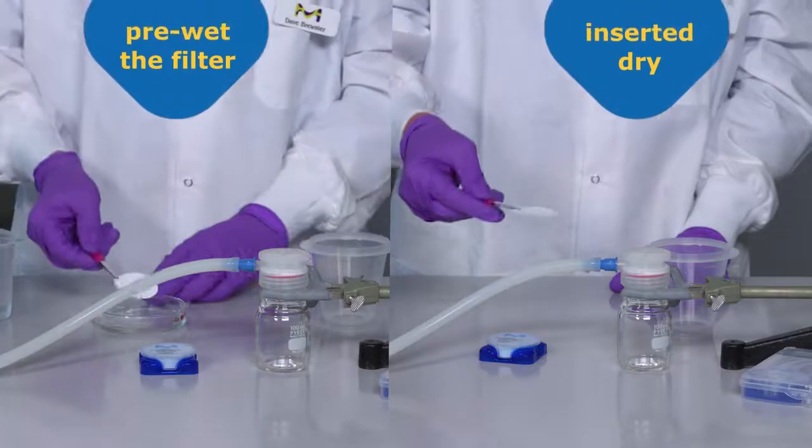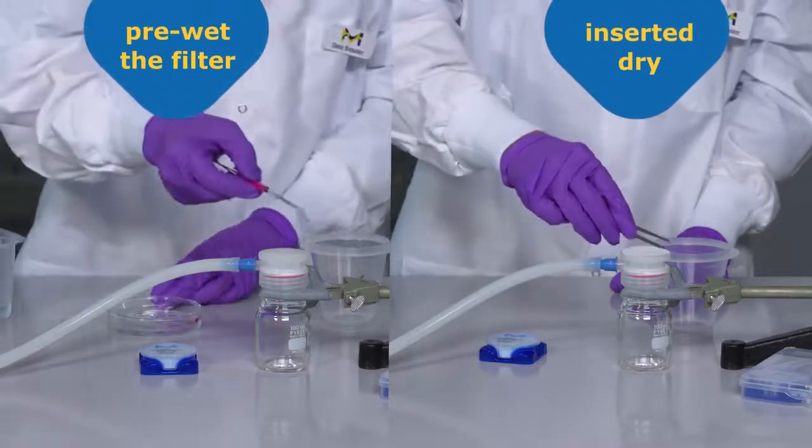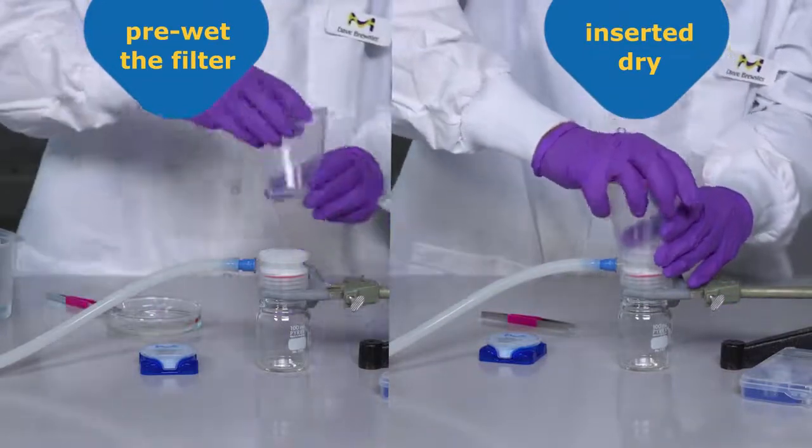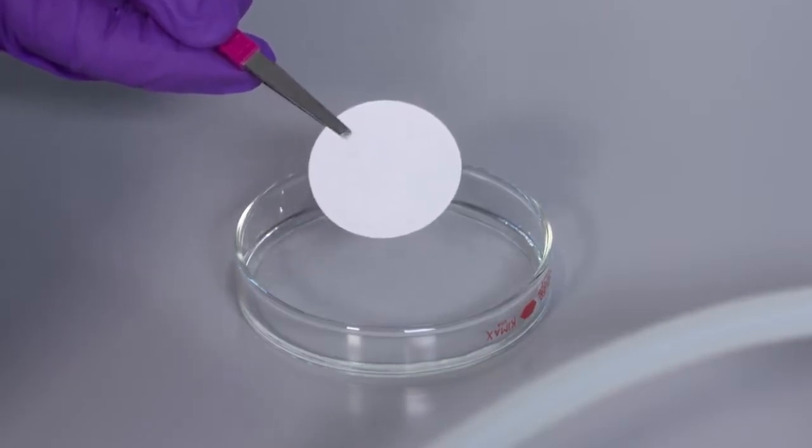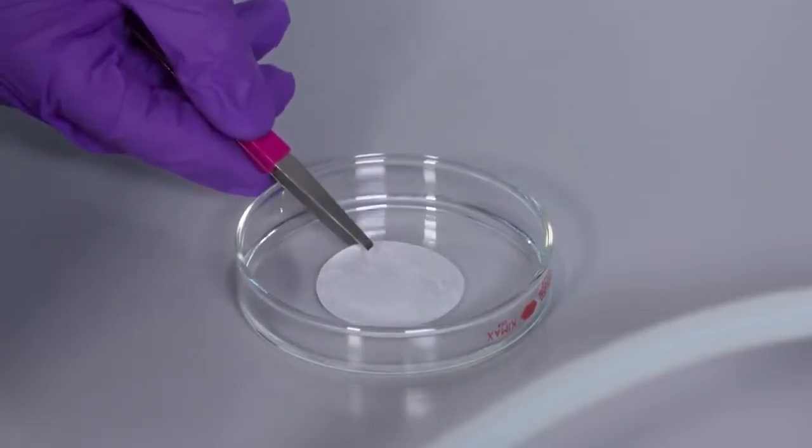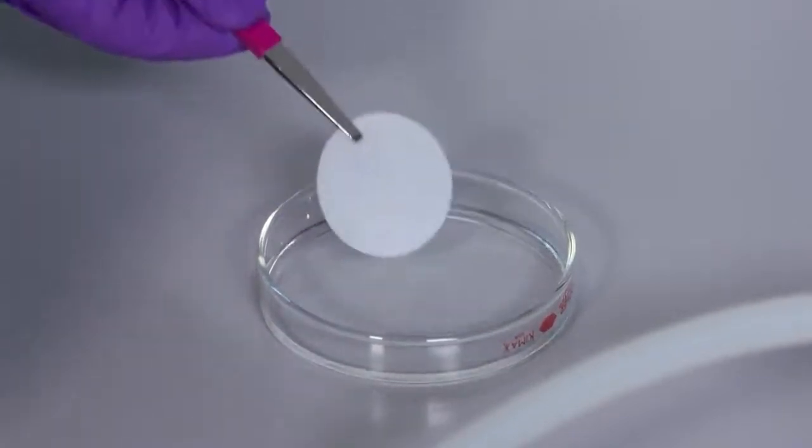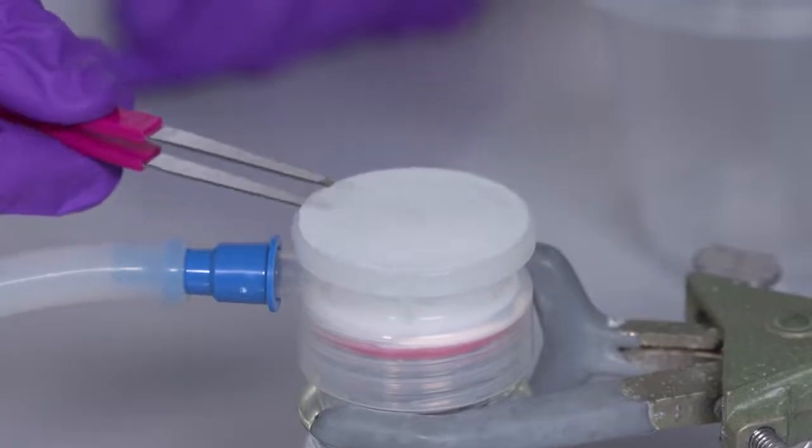When using the Natrix Q membrane, you may choose to pre-wet the membrane or insert it in the setup dry. In this case, we will pre-wet the membrane with Millicu deionized water. We will then insert the pre-wet membrane into the Millicupflex assembly on the receiving container.